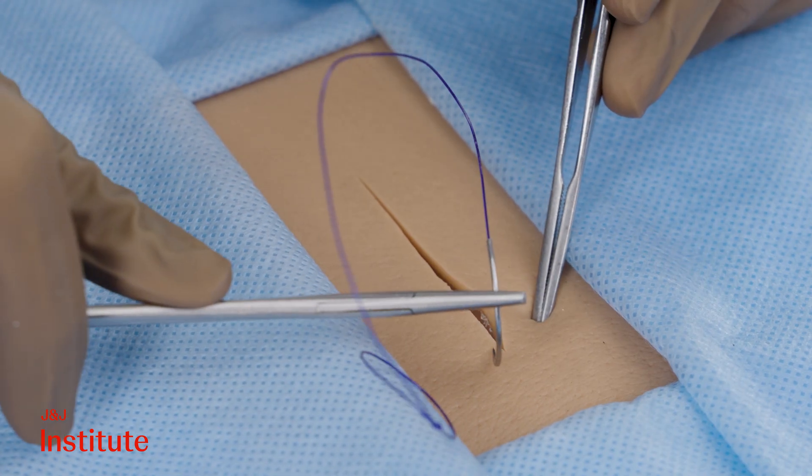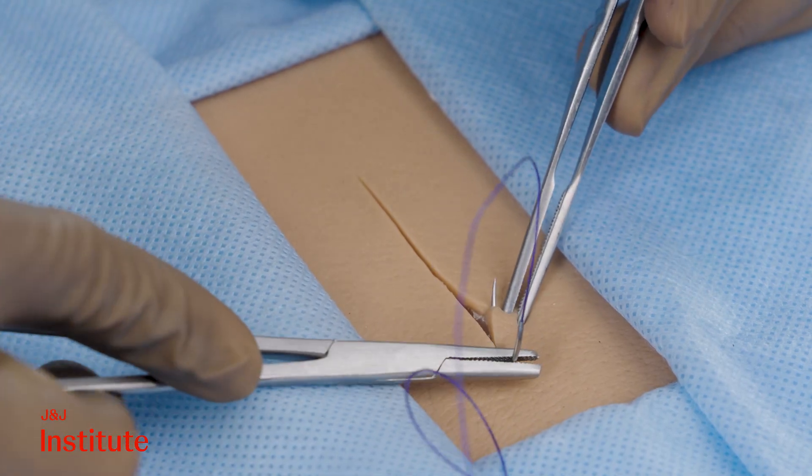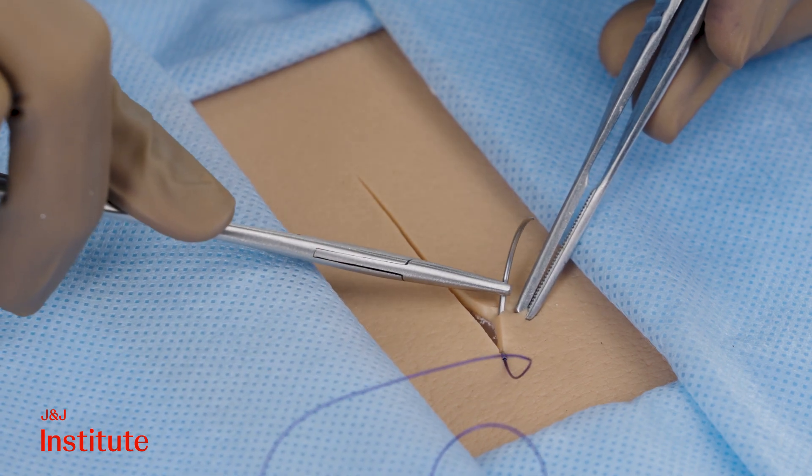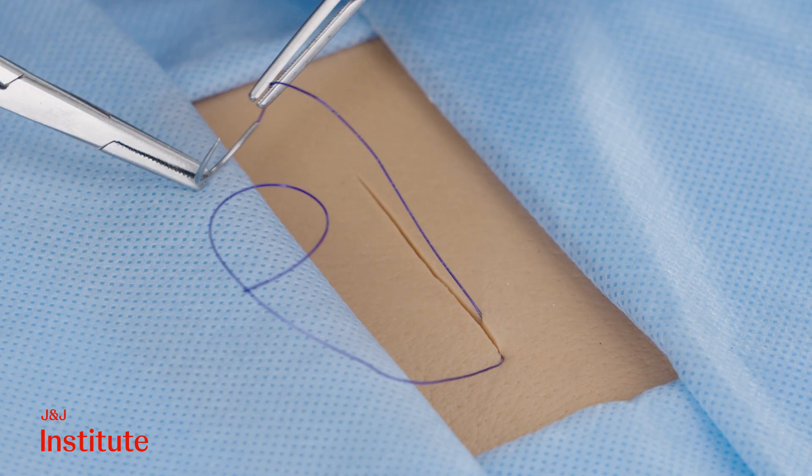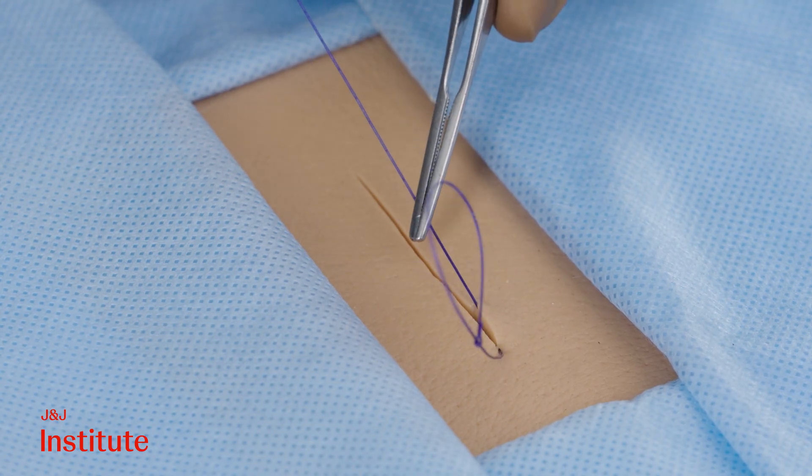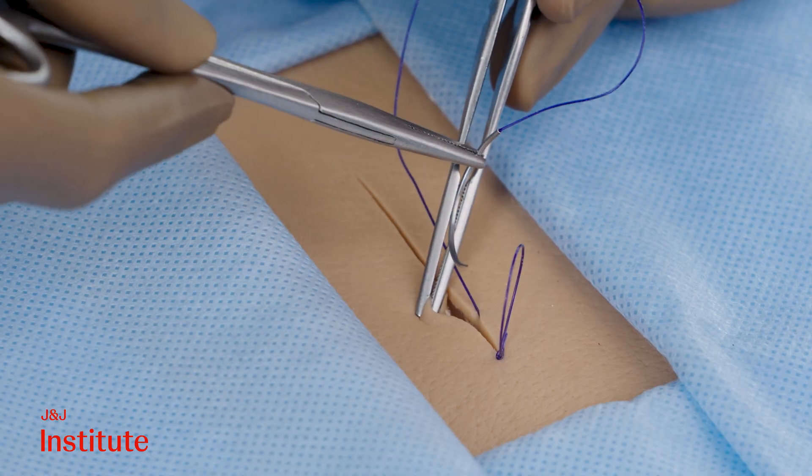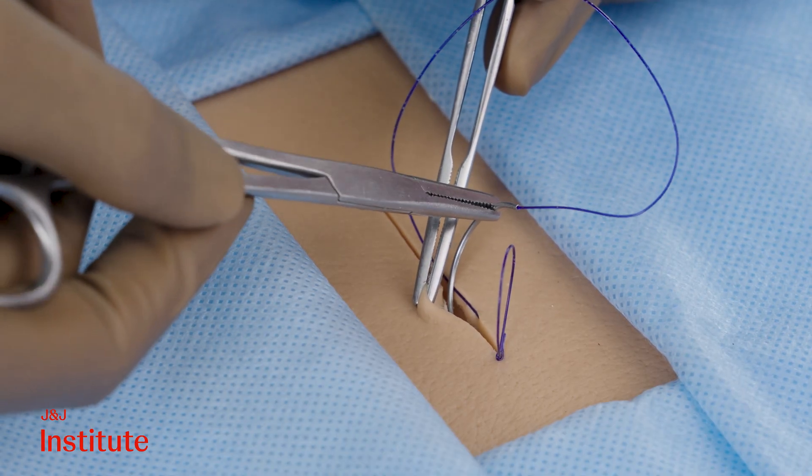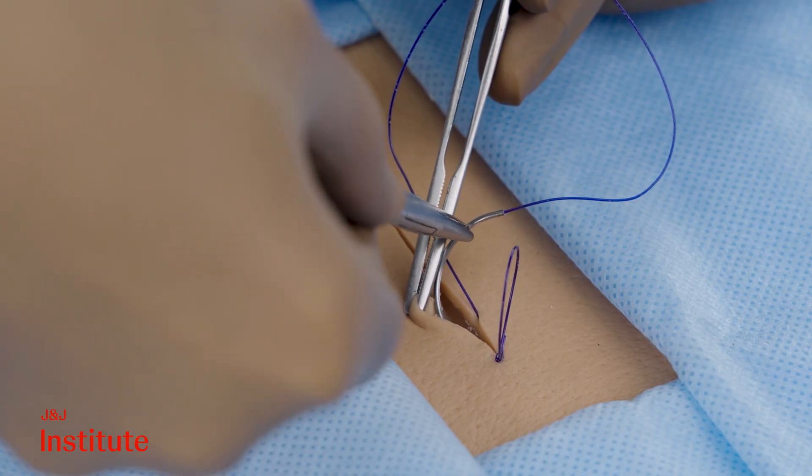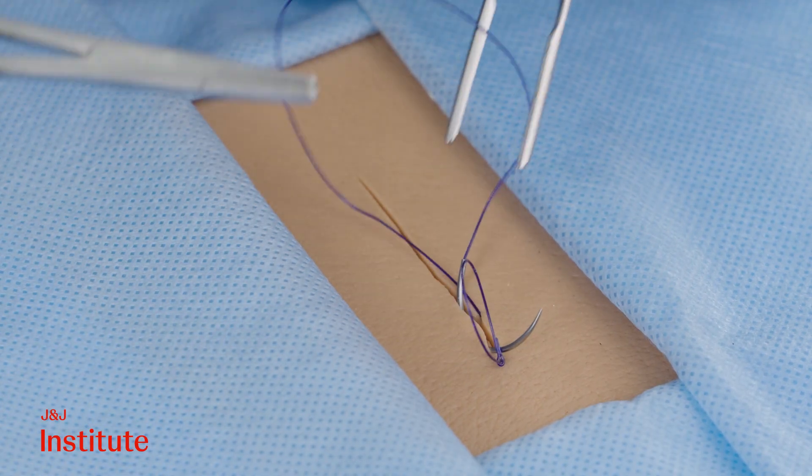Initial bites at the incision's end are taken as previously shown. Like for standard subcuticular sutures, the initial bite is four-handed, whereas the second bite on the opposite side is taken in a reverse direction towards the angle.